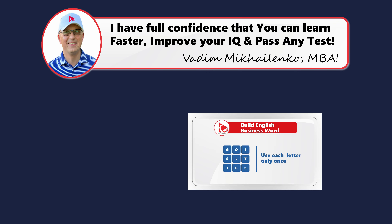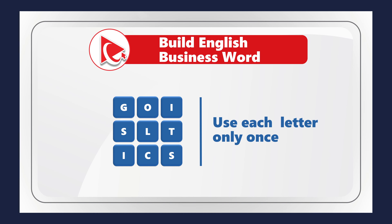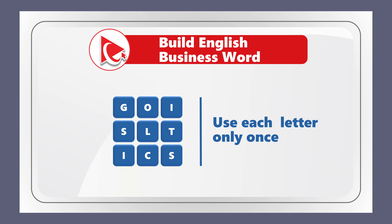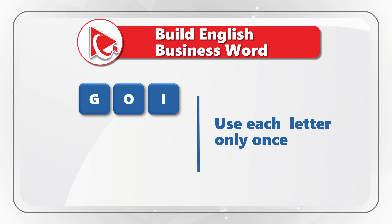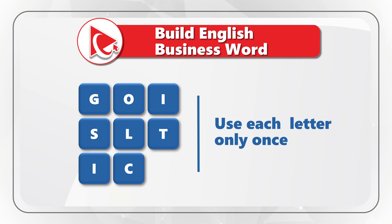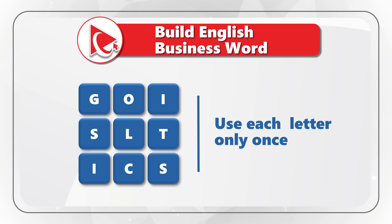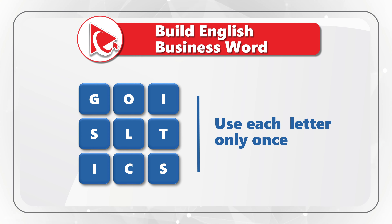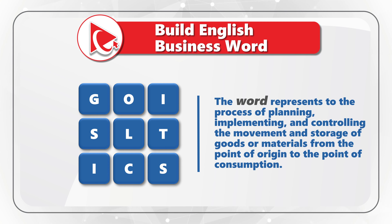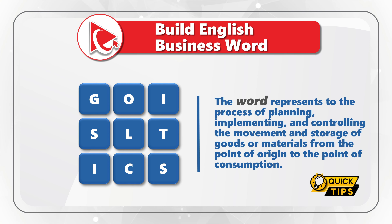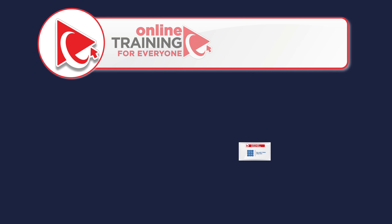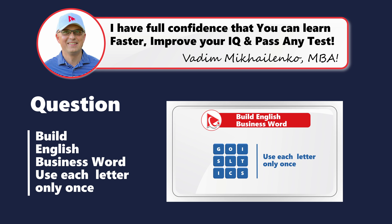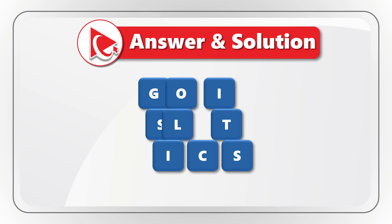There is an amazing question to test your English business vocabulary. You need to build an English business word using all the letters presented on the screen, using each letter only once. The letters are G-O-I-S-L-T-I-C-S. Here's a hint: the word represents the process of planning, implementing, and controlling the movements and storage of goods or materials from the point of origin to the point of consumption. The answer is logistics.